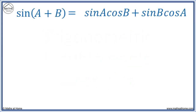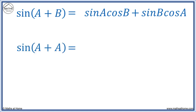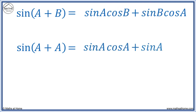We find the double angle formula for sine using the compound angle rule: sine(a + b) equals sine(a)cos(b) plus sine(b)cos(a). We now replace each b with another a, so that sine(a + b) becomes sine(a + a). Replacing all b's with a's in the equation, we get sine(a)cos(a) plus sine(a)cos(a).